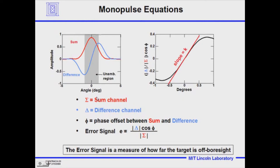What we end up with for the error signal is: we take the magnitude of the difference signal, multiply by the cosine of the phase between the sum and difference channels, then divide by the sum signal. Within the beam width of the radar, this produces a linear line. The amplitude of this error signal — delta divided by sum times the cosine of the phase angle — is a measure of how far off you are from the center of the beam. If it's negative, you're off to the left; if positive, off to the right.